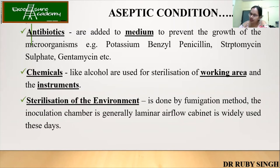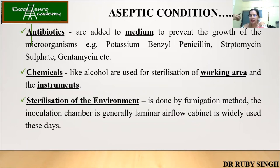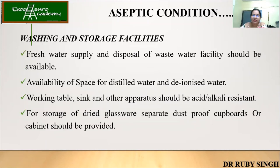Once everything has been done, again sterilize with 70% alcohol, wipe your hand, close the hood, and it's done. Sterilization of the environment is done by fumigation method. The inoculation chamber — generally a laminar airflow cabinet — is widely used. Fumigation is done in most labs to prevent contamination in the hood itself from outside air. It is advisable that your lab should undergo fumigation once a week.